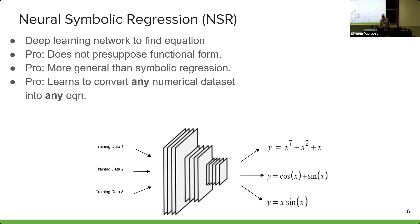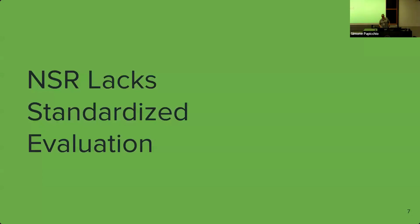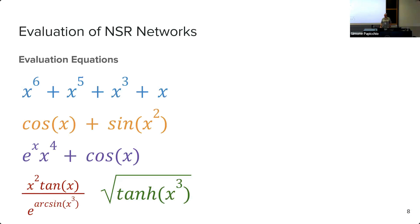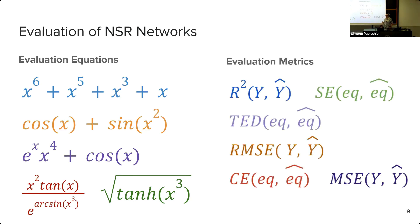However, in the field of neural symbolic regression, there is currently an issue: there is no standardized evaluation across current NSR techniques. In order to evaluate an NSR network, two things are needed. The first are the actual evaluation equations — what equations you're testing the network on to see if it is producing correct equations — and there is a near infinity of possible combinations of mathematical operations. The other component needed is the evaluation metrics, what metrics you're looking at to determine the accuracy of the networks.